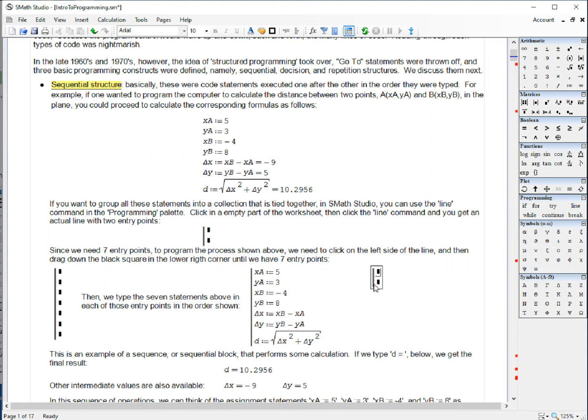If you want to increase the number of entry points, one thing you could do is click to the left of the line, grab hold of this point at the bottom, and sometimes it's kind of difficult to get, but once you get hold of that, you can increase to however many number of points you want. For this case, for example, I needed seven entry points, and then I started filling up the statements required for this particular program.